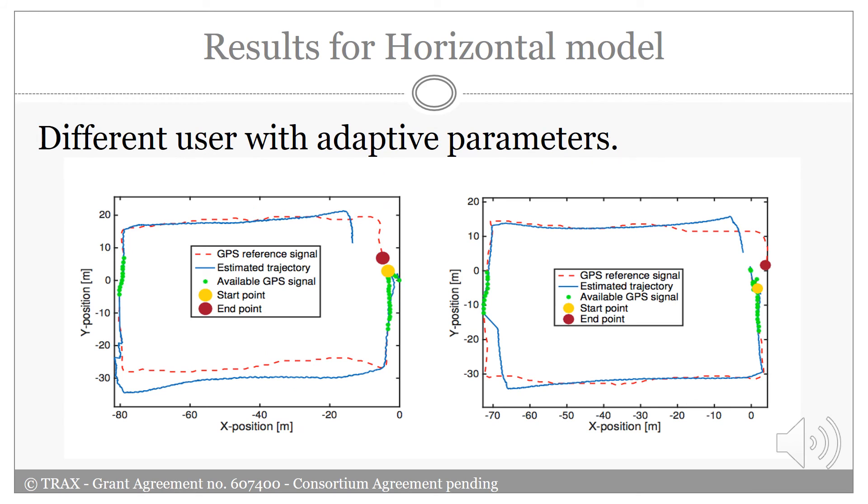These two figures represent results using the horizontal model. In these figures, the PDR estimation is shown with adaptive gate step detection threshold when two users walk slowly. The threshold for step detection has been estimated for these figures. The GPS signal, which is indicated with the green dots, is only assumed available for a few seconds in the beginning and the middle of the experiments. As can be seen in this figure, using the adaptive step detection threshold provides reasonably good position estimation even during periods without GPS coverage.